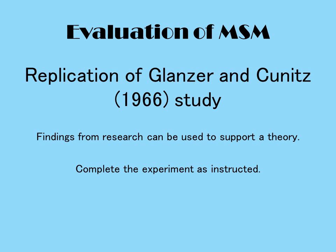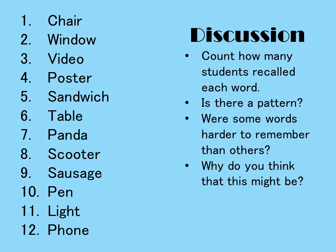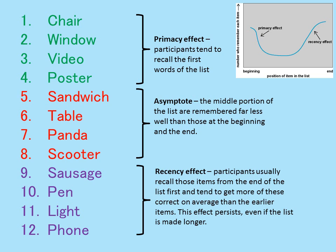Another study supporting the multi-store model is Glanz and Kunitz (1966). Words were read aloud slowly and clearly, and participants recalled as many as they could. Words at the top of the list were remembered due to the primacy effect — participants tended to recall the first words. Words at the bottom were remembered due to the recency effect. The middle words were recalled much less often. This effect holds even if the list is made longer.